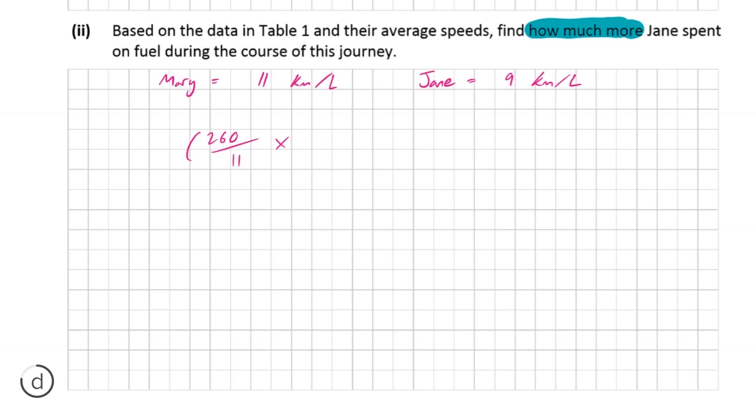So we're going to put that over 11 and times how much we know that a liter of fuel costs, which in euros is one euro and 32.9 cents. And for Jane, we've got the same thing, except that she only got nine kilometers out of each liter. So we're going to put that over nine, but we know the price is the same.